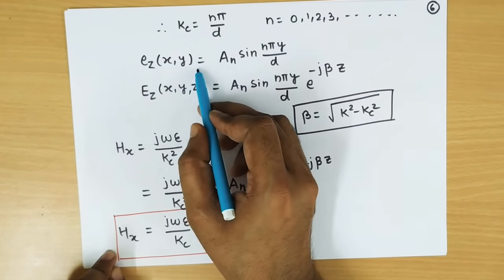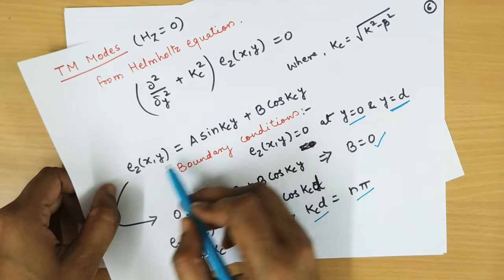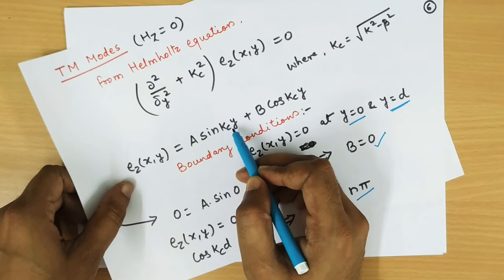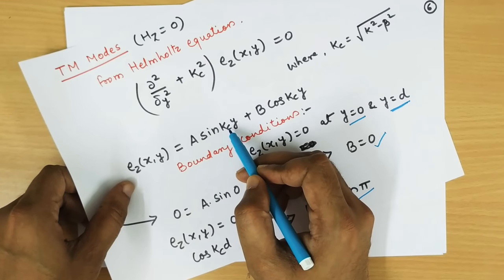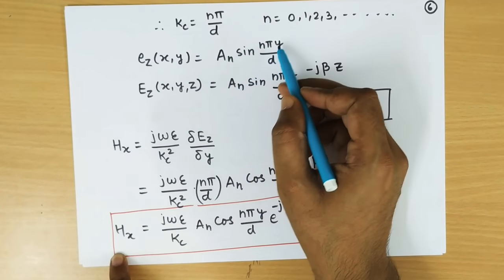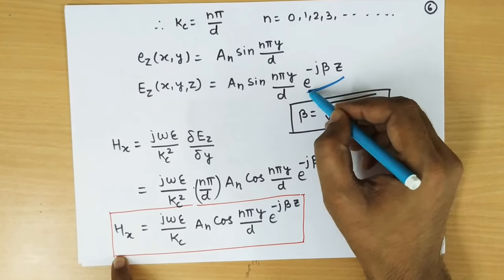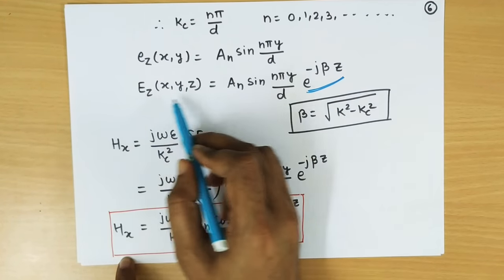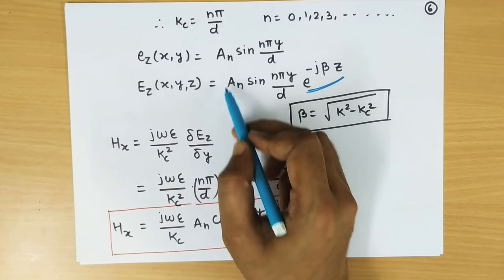So we can write E_Z(x,y) as A sin(k_c y). Since B is 0, we have E_Z(x,y) equal to A sin(n pi y over D), where A is a constant depending on the value of n, so we write it as A_n. Thus E_Z equals A_n sin(n pi y over D). Including the phase of the wave, we multiply by e to the power minus j beta z, giving the total electric field E_Z(x,y,z).